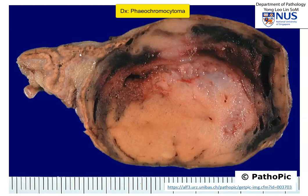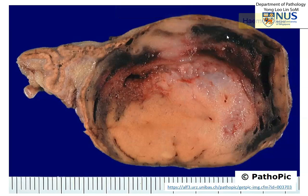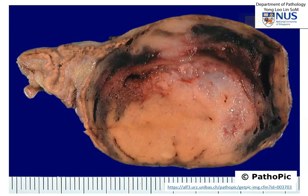Pheochromocytomas are tumors that arise from the adrenal medulla. And grossly, they can appear quite tan and lobulated. Sometimes they may have areas of hemorrhage, as you can see here, or areas of cystic change, as we saw earlier.